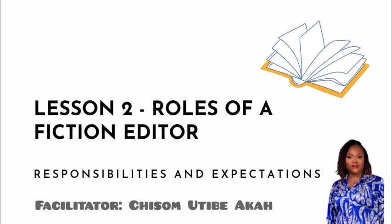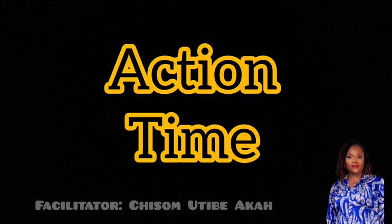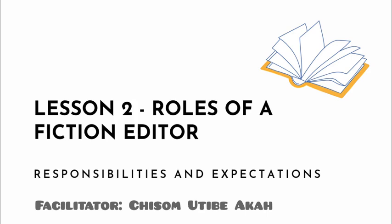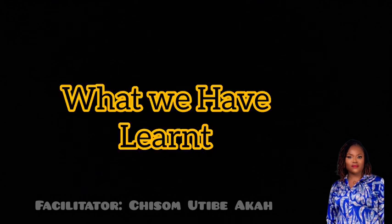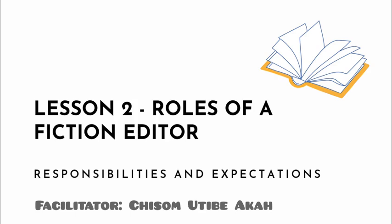Now you have an idea of these three levels of editing. Activity time: mention four roles and responsibilities of an editor, and in one sentence each, mention the difference between developmental editing, copy editing, and proofreading. What we have learned: we have learned what an editor is expected to do and responsible for, and we have understood the difference between developmental editing, copy editing, and proofreading. Next, in lesson three, we will look at the full process of editing fiction at all three main levels. Come along — it's going to be an intense session. Congratulations for making it this far.